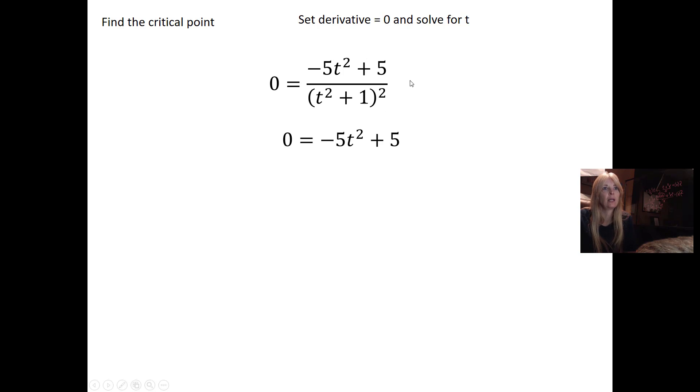Notice when we set the derivative equal to zero, if I multiply both sides by the denominator, the denominator just goes away. All we really care about is when does the numerator equal zero. So I solve this. I moved the 5t squared to the other side, I divided both sides by five, I square root. When you square root, remember technically you should be doing plus and minus. Why is it positive one only? Because this is time.